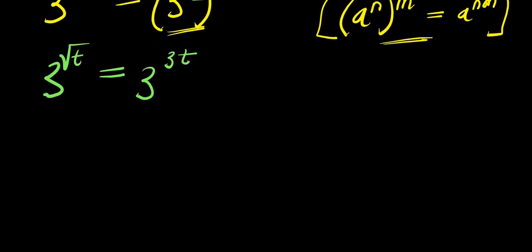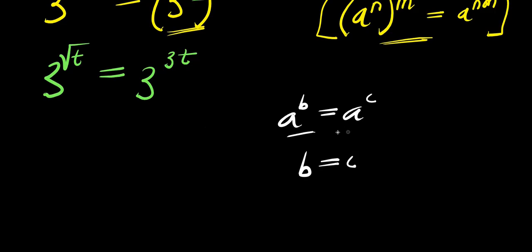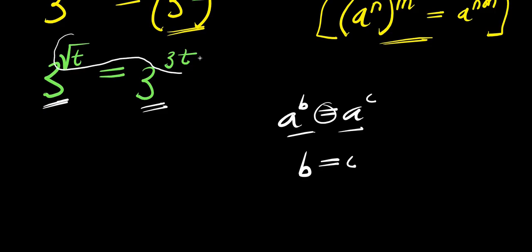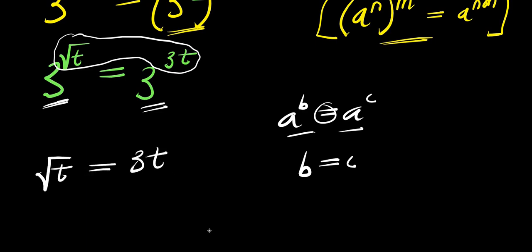Now consider this: if you have a power b equals a power c, that means b equals c. Why? Because the bases are the same and there is an equality sign, so you compare the exponents. Right here we have base 3 on both sides, so you can compare the exponents. So you have square root t equals 3 times t.